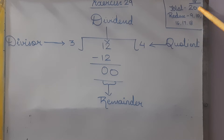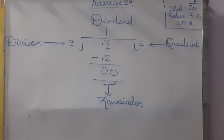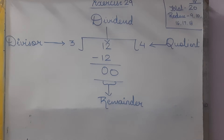In exercise 29, there are 20 questions in which we are going to reduce question numbers 9, 10, 16, 17, and 18.